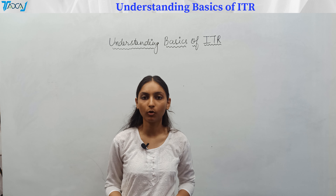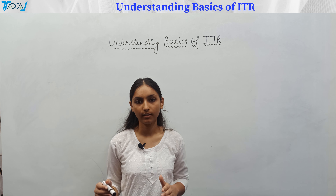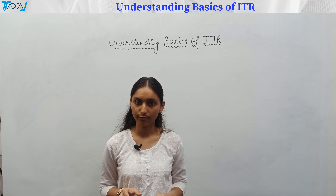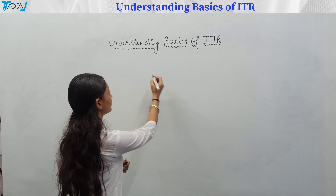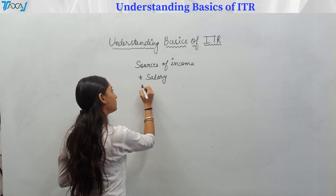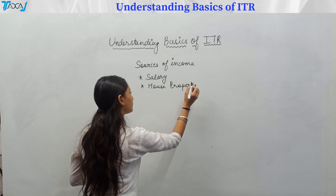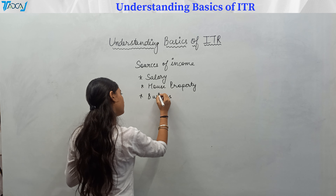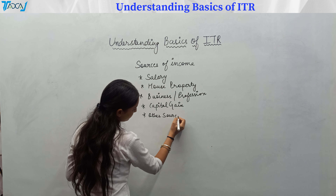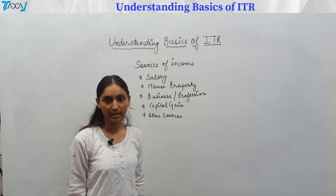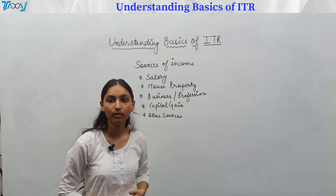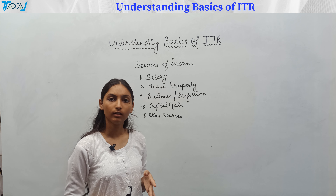The next important thing is understanding your income. Basically, income comes from five sources: salary, house property, capital gain, business and profession, and other sources.